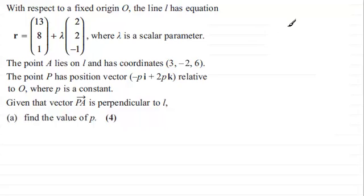So my sketch would be something like this. I'd have the line l, so we'll just mark that in. This is the line l. And we'll have an origin. We'll say this is the origin, about here. Mark that in with O.